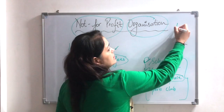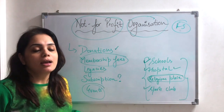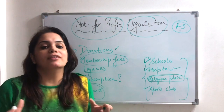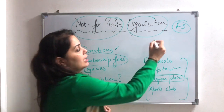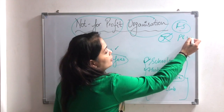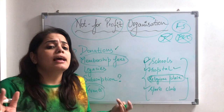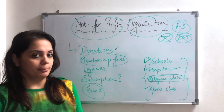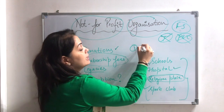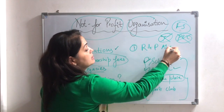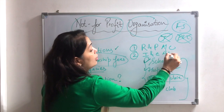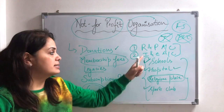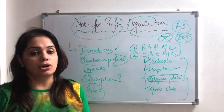Now, talking about financial statements — in normal companies, we make a trading account, profit and loss account, and finally a balance sheet. But the motive of this organization is not profit and loss. So here, instead, we prepare a receipts and payments account, an income and expenditure account, and finally a balance sheet. I will explain how to prepare each of these in the coming videos.